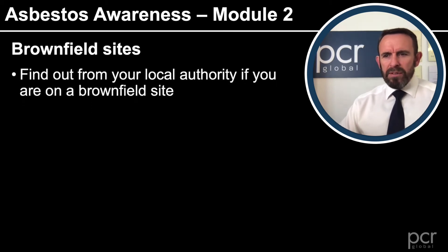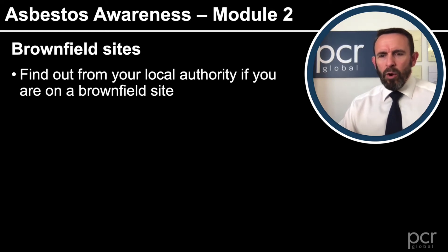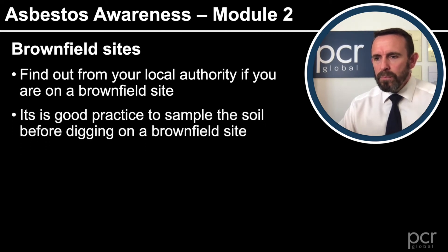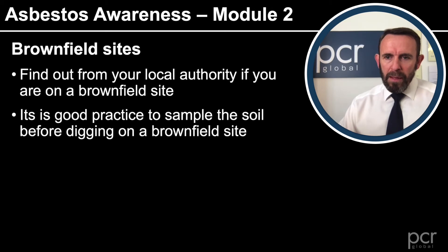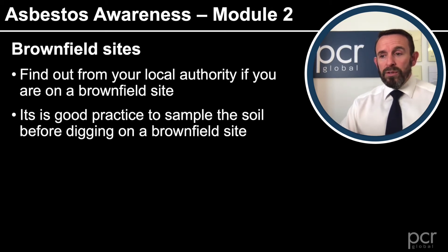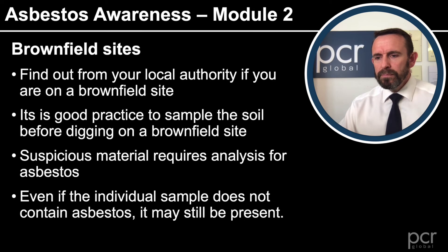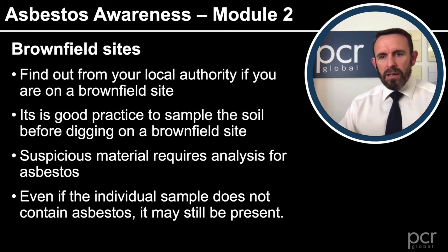A couple of things we really have to take in. We need to find out from the local authority if we're actually on a brownfield site — this should be done before any site is taken over. Think of pre-construction information. A location to go to get that answer would be from the local authority. Following on from that, it would obviously be good practice to sample the soil before digging into a brownfield site. Any suspicious material found would then require analysis for asbestos. Remember that even if an individual sample doesn't contain asbestos, it may still be present in the location.